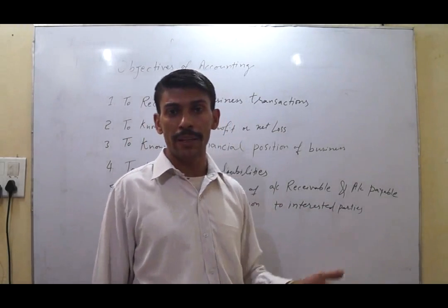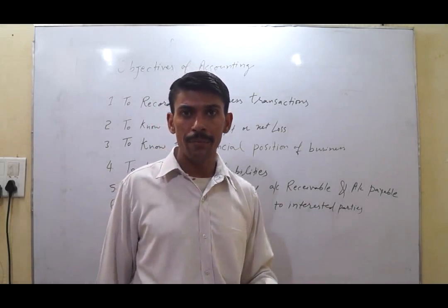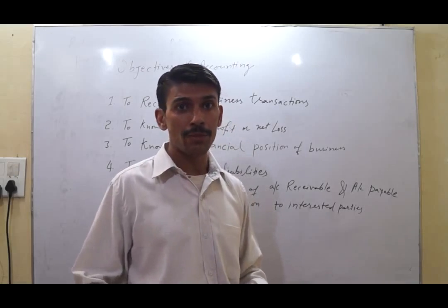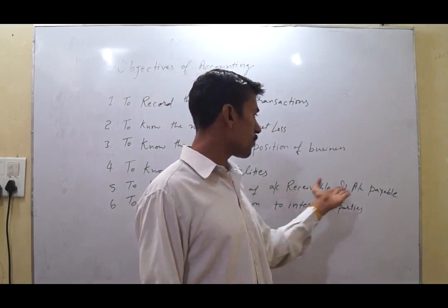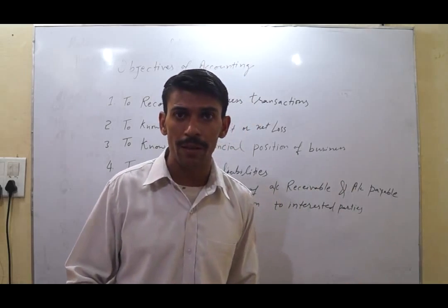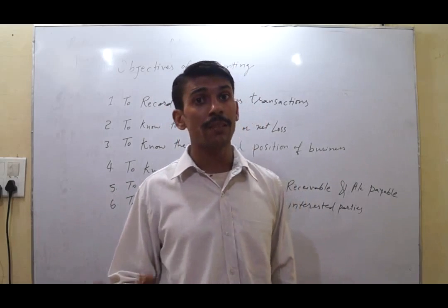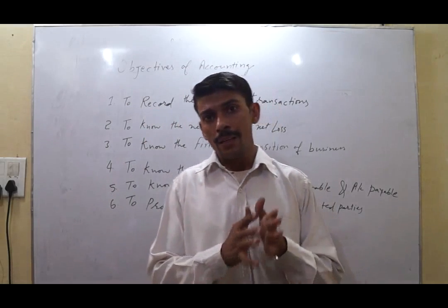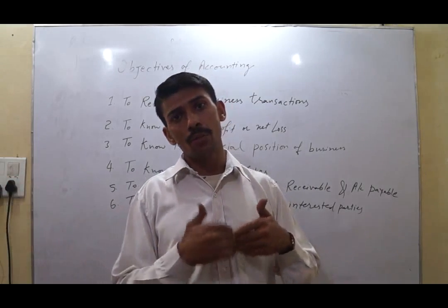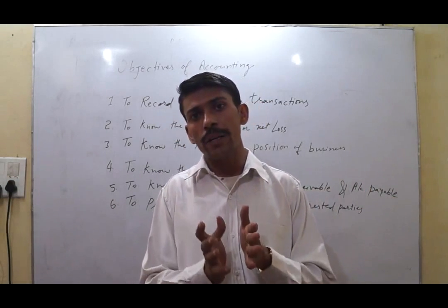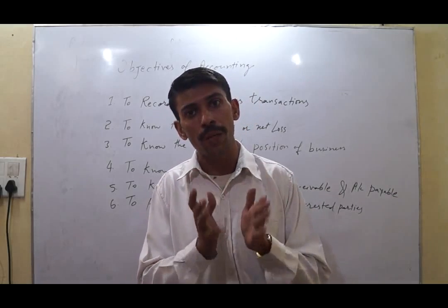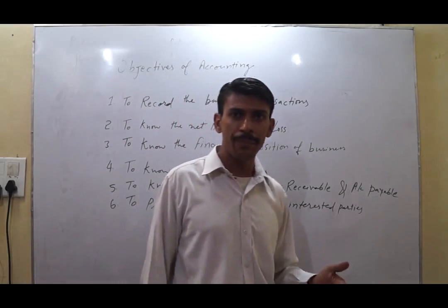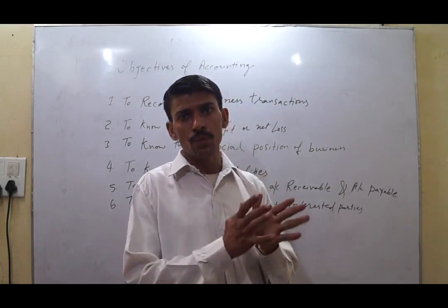The fifth objective is to know the balance of accounts receivable and accounts payable. Accounts receivable refers to money we have to receive because we sold goods on credit. Accounts payable is the amount we have to pay because we bought goods on credit. Accounting tells us the total amount of debtors and creditors so we can calculate the net amount we have to receive or pay.